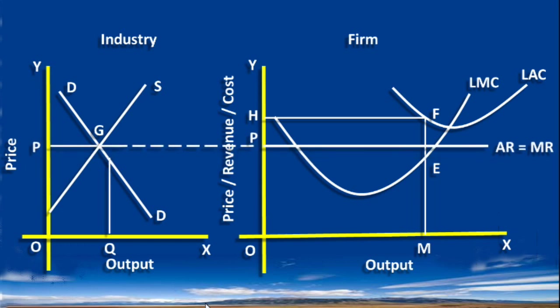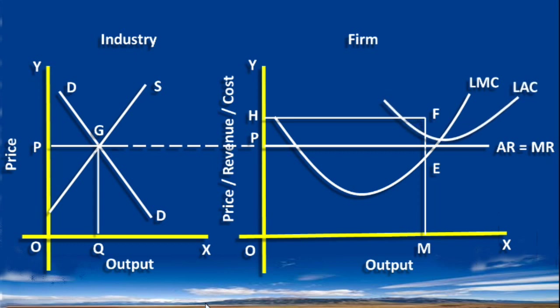On the other hand, with the exit of firms, the demand for factors of production falls. The factor prices also fall, and the cost curve shifts downward. A new equilibrium is established.